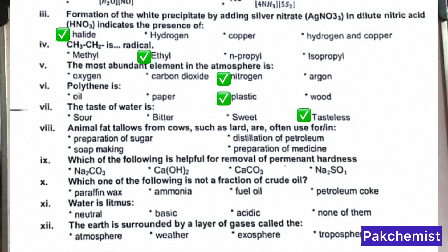MCQ 7 (animal fat): Animal fat which is used by cow — what purpose is it used for in making soap? If you remember the first step, that fat or oil is used for the saponification process. So this is all about fat.